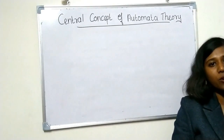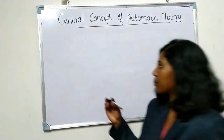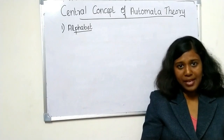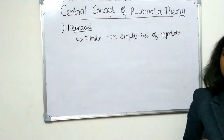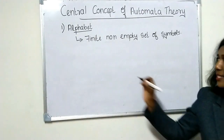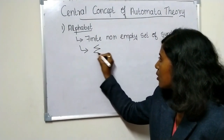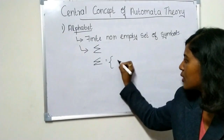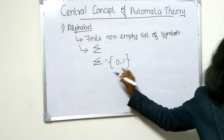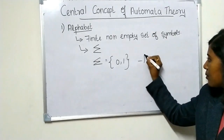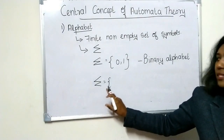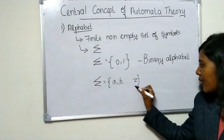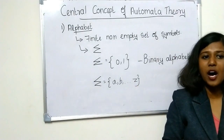First we are going to discuss Alphabet. Alphabet is a finite, non-empty set of symbols. The symbol Sigma denotes Alphabet. For example, if Sigma is equal to {0, 1}, that is called the Binary Alphabet. Sigma can also equal {a, b, ..., z}, which is the set of all lowercase letters.